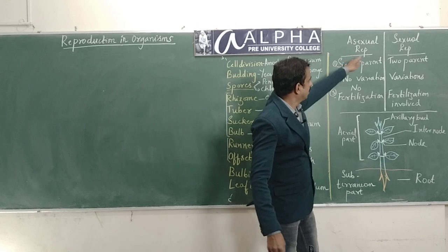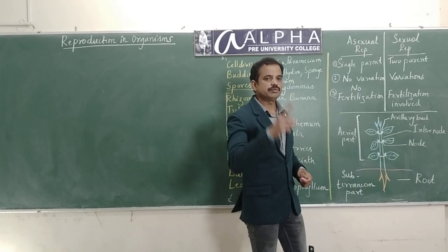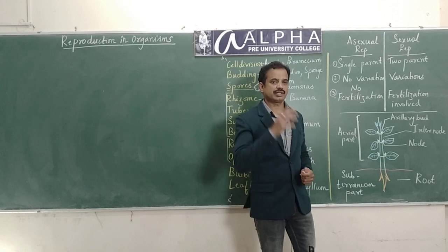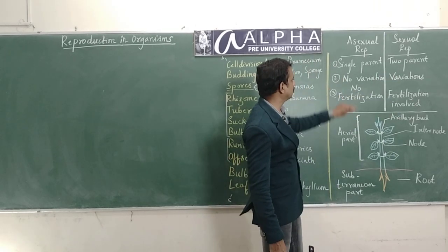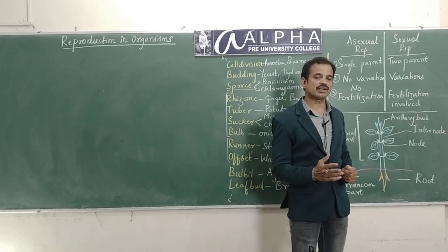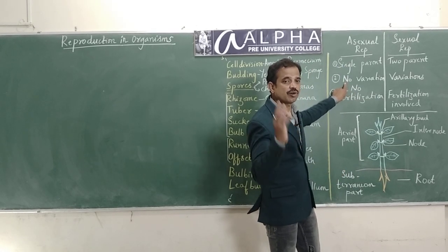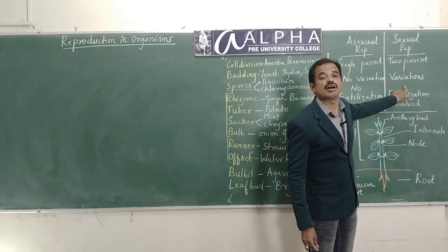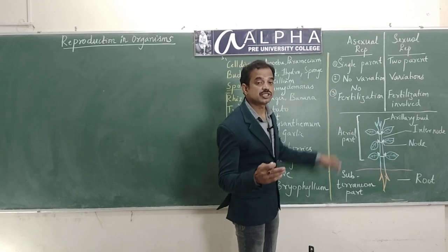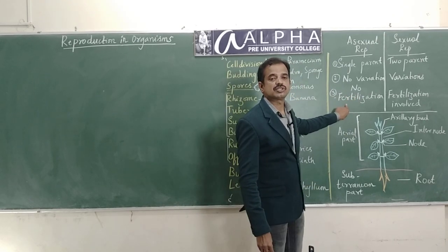I have written Asexual Reproduction and Sexual Reproduction on the board. Regarding Asexual Reproduction, I told you it is reproduction by a single parent - it is Uniparental Reproduction. Sexual Reproduction takes place by two parents - it is Biparental Reproduction. In Asexual Reproduction, variations are not seen among offspring born from the same parent, and we are going to consider the reason why in this class. Whereas in Sexual Reproduction, variations are seen.